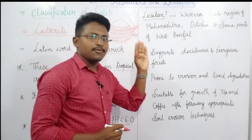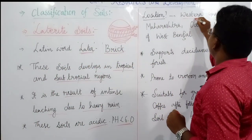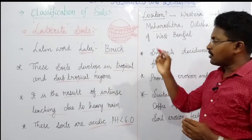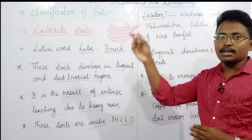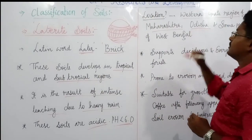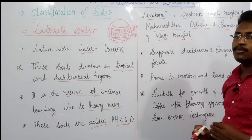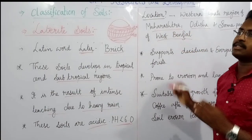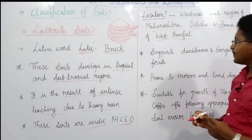These soils are found mainly in the Western Ghats regions of Maharashtra, extending into South India. They are also found in Odisha and some parts of West Bengal. So in India, laterite soils are primarily located in the Western Ghats of Maharashtra, Odisha, and parts of West Bengal.